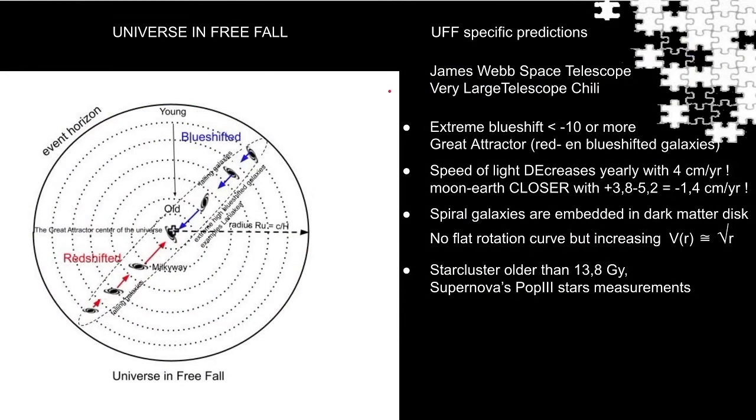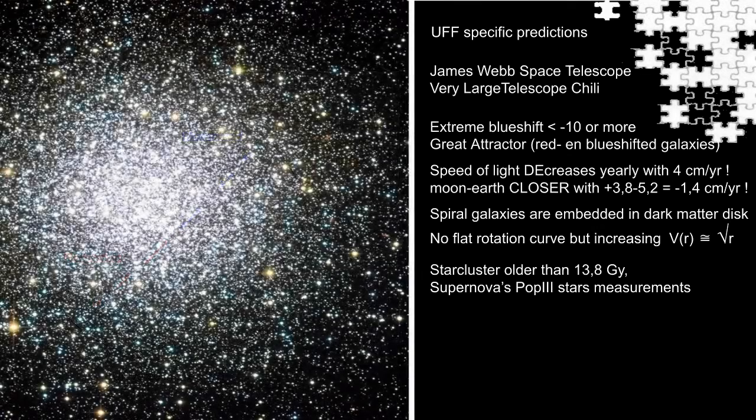And last but not least, in the 90s of the last century, the age of some globular star clusters were measured way older than 13.8 billion years, even up to 20 billion years. They perfectly fit into the UFF model.